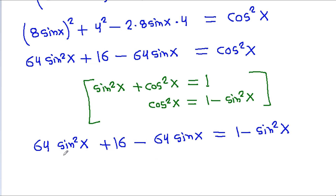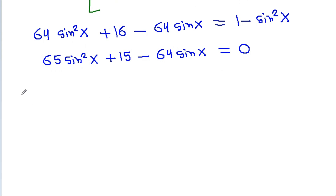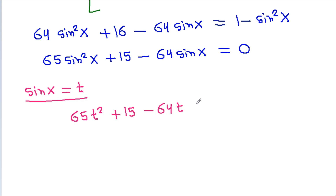So 64 sin²x plus sin²x gives 65 sin²x, and 16 minus 1 gives 15. The equation becomes 65 sin²x minus 64 sin x minus 15 is equal to 0.